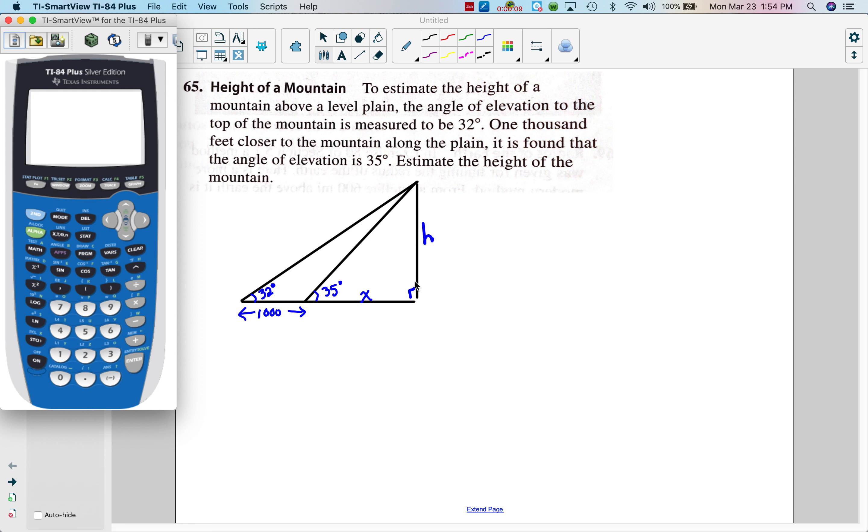So here is my lovely mountain marked H for the height of the mountain. Here is the spot where one person is measuring the angle of elevation to the top of the mountain from this spot is 32 degrees, and then if you walked a thousand feet closer to the mountain